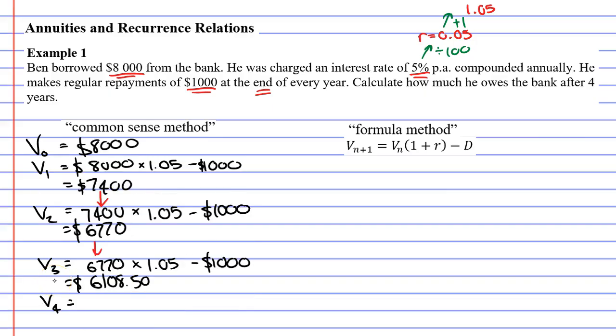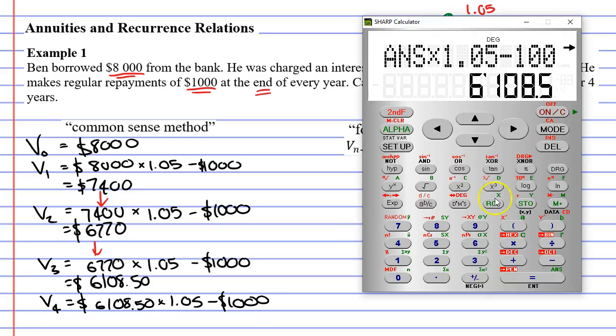And we're going to need some room here. V4, which is the value after four years. We take our previous result, $6,108.50. We increase it by 5%. We add on interest at 5%. And we take away our repayment of $1,000. Times 1.05 minus $1,000. And we're left with $5,413.93.